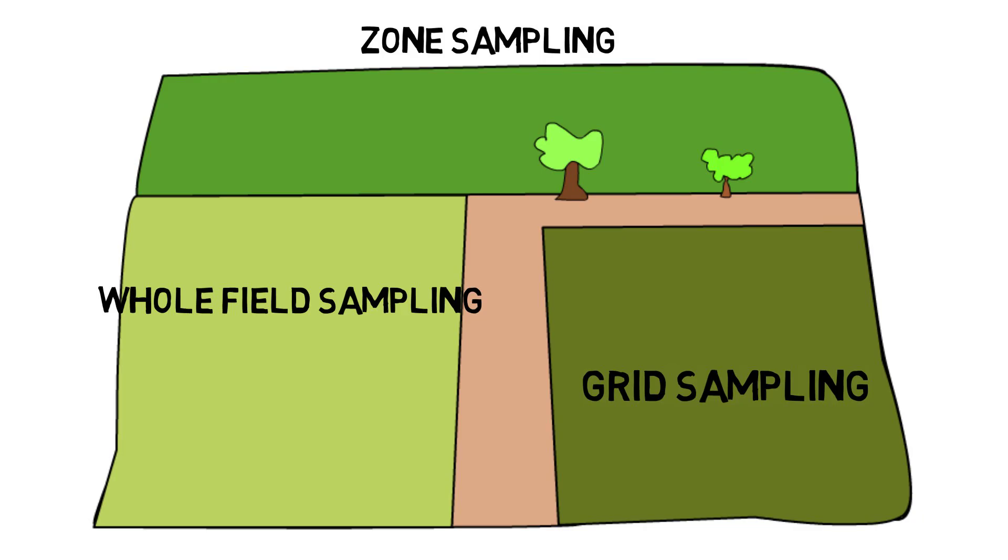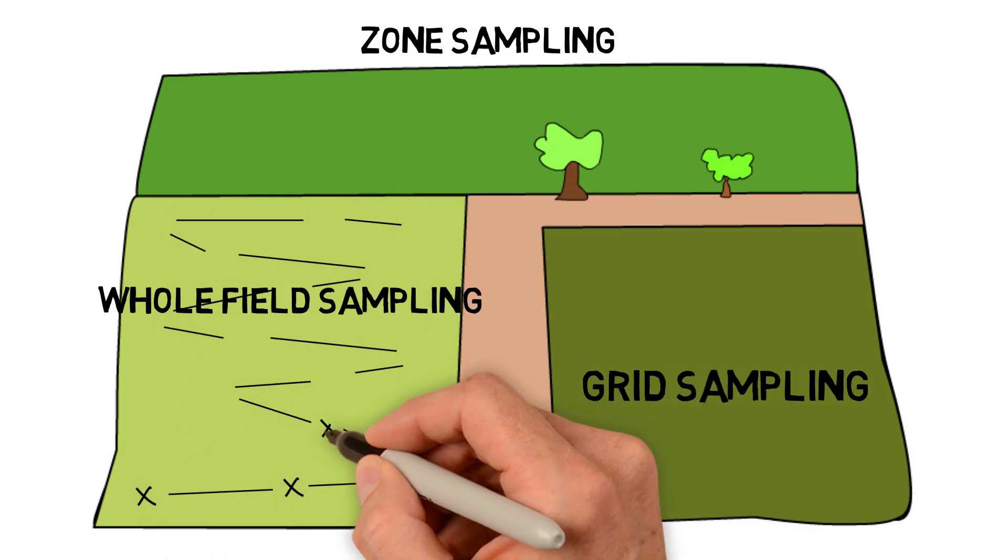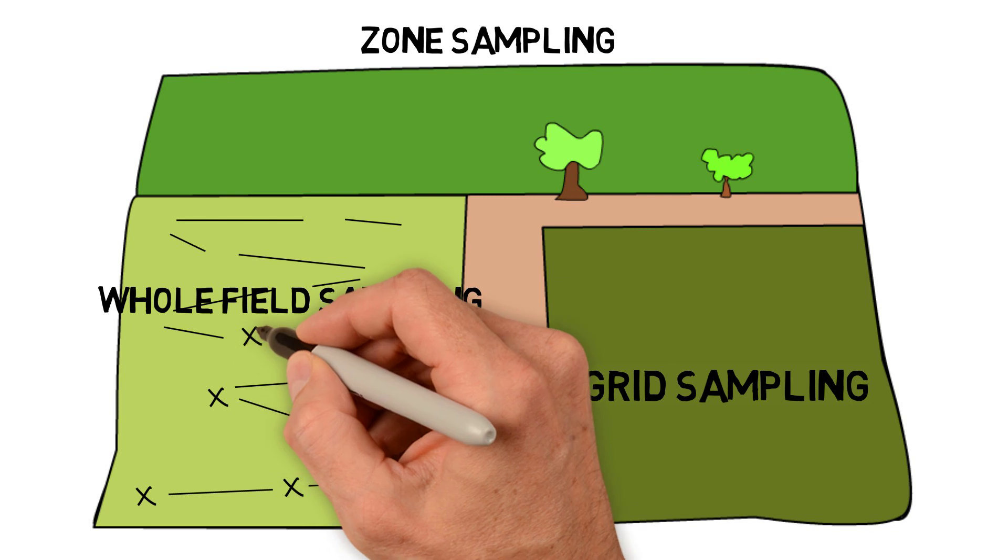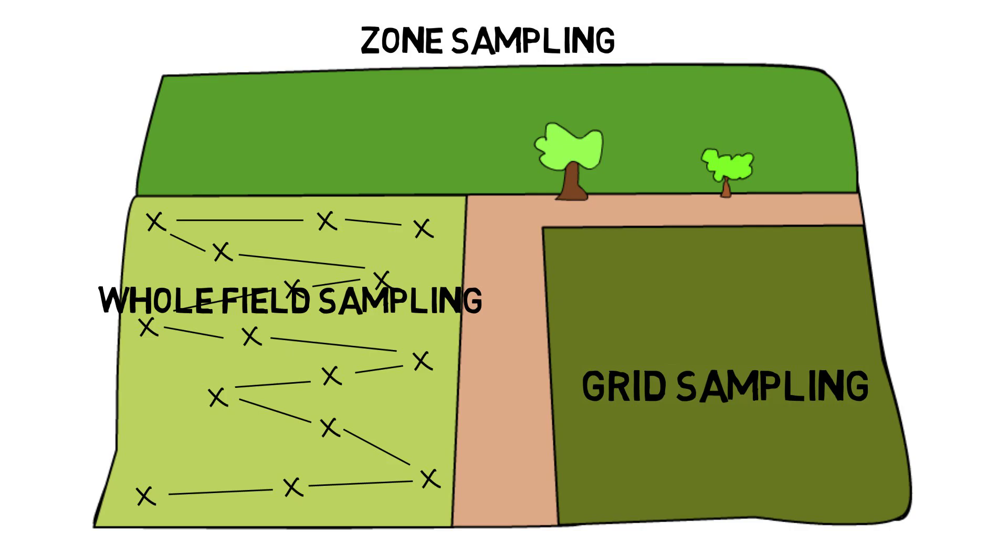Whole field sampling is best when you're looking for an average for a whole field, like when a field doesn't have very much soil variability. For this type of sampling, you'll take 12 to 15 cores at random through the field, usually in a W-shaped pattern. You'll then take these 12 to 15 cores and composite them into a bucket and send them to a lab.